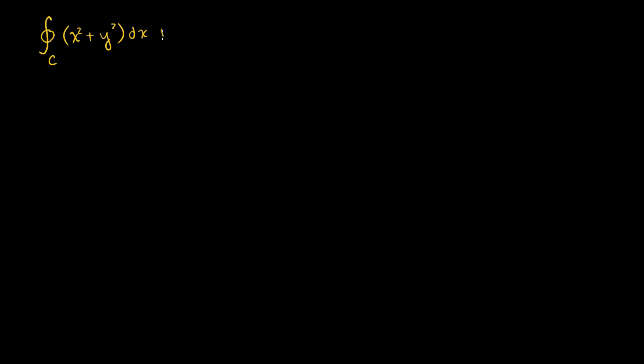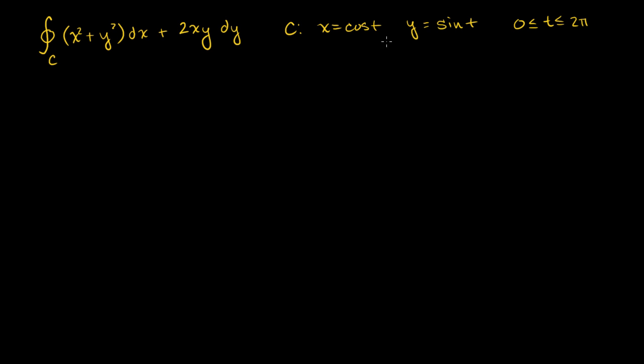Let's see if we can apply some of our new tools to solve some line integrals. We have a line integral along a closed curve of x squared plus y squared times dx plus 2xy times dy. Our curve C is parameterized by x equals cosine of t and y equals sine of t, valid for t between 0 and 2 pi. This is essentially a unit circle in the xy plane, and let's see if we can use our recent discoveries to simplify this process.